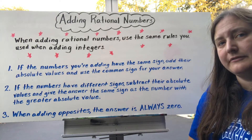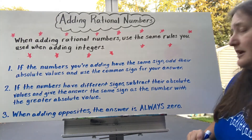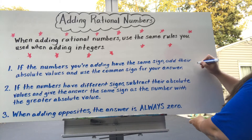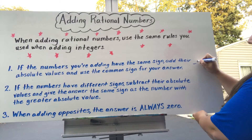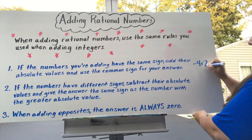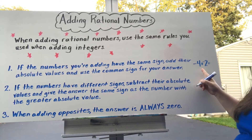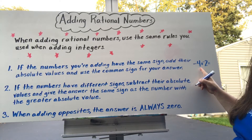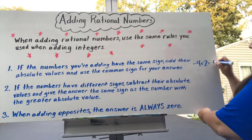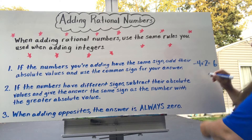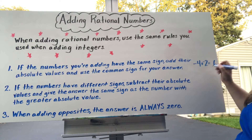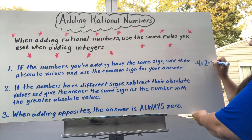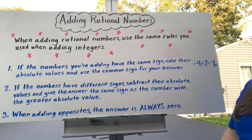An example of that would be if you were adding negative 4 and negative 2. The absolute value of these two numbers, 4 and 2, gives us 6, and since they were both negative, I'm going to use that common sign with my answer. My answer will be negative 6.